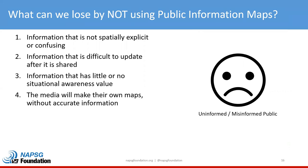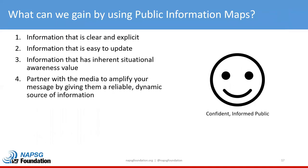What can we lose if we don't use public information maps and don't have a game plan? We can lose the public's trust — they'll feel uninformed or even misinformed. On the positive side: if we do use public information maps with a game plan, we'll have information that's clear and explicit, easier to update, with inherent situational awareness value. We can also partner with the media to amplify our message by giving them a reliable, dynamic source of information that they crave.